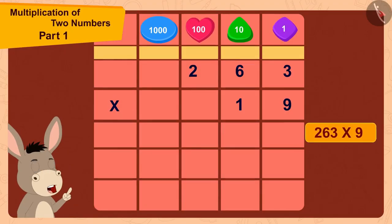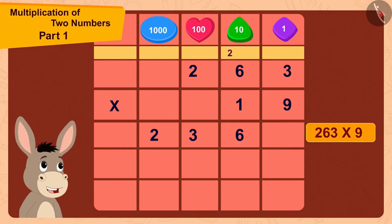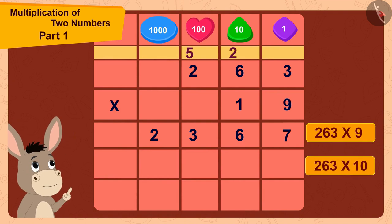9 times 263 is 2367. Now, to multiply 263 with 10, first I will write a 0 here.